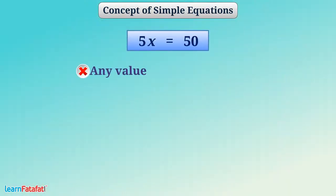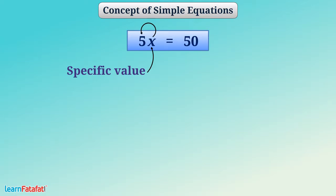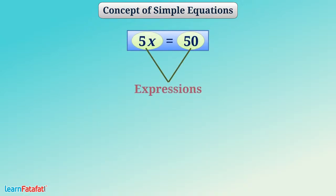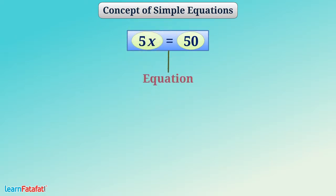Here, we cannot write any value for x. There should be a specific value of x which, when multiplied with 5, gives 50. This means we have put a condition on the value of the variable. The condition is that two expressions should have equal value. Such an expression, which puts a condition on the value of a variable, is called an equation.